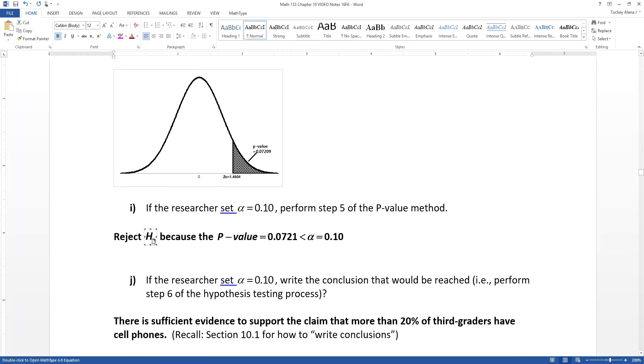So that means we make the decision to reject the null hypothesis because our p-value of 0.0721 is in fact less than our alpha, which is 0.10.